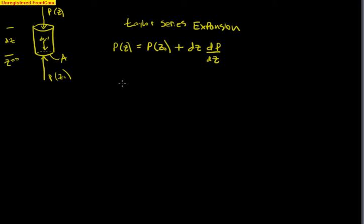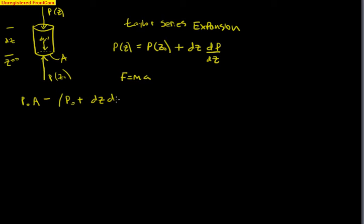Next we use a force balance on the differential cylinder to derive an expression useful for manometer problems. Applying Newton's second law, F equals ma, with the positive axis upward: p-naught times A minus the pressure force acting down — substituting the Taylor series expansion, that is (p-naught plus dz times dp/dz) times A — gives the net pressure on the cylinder.